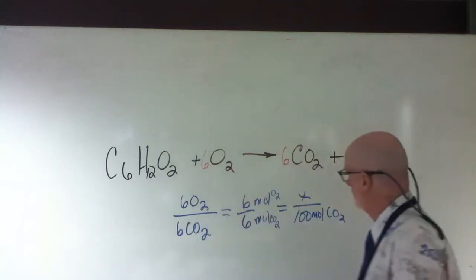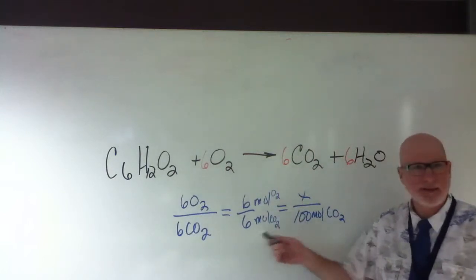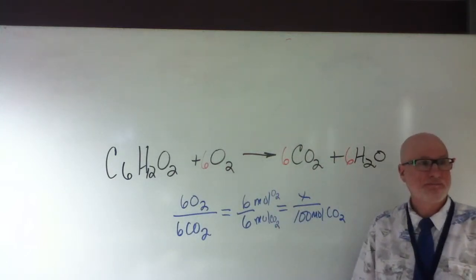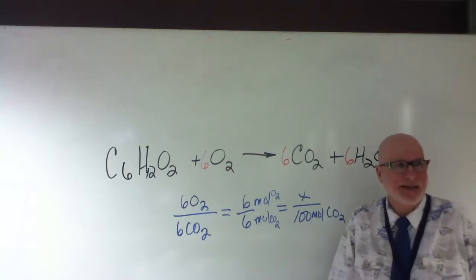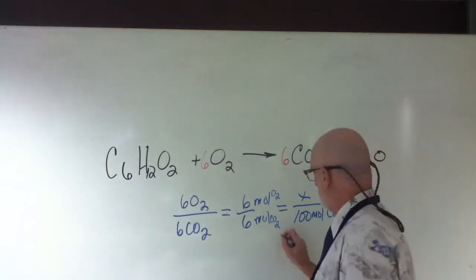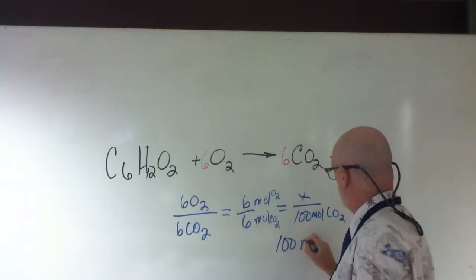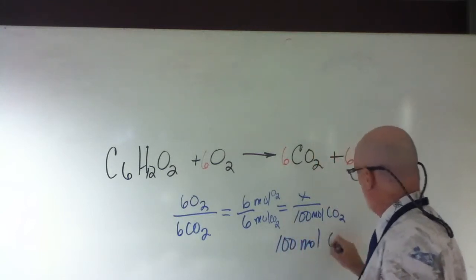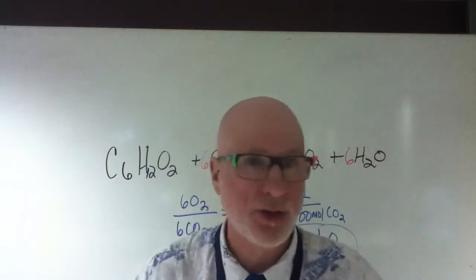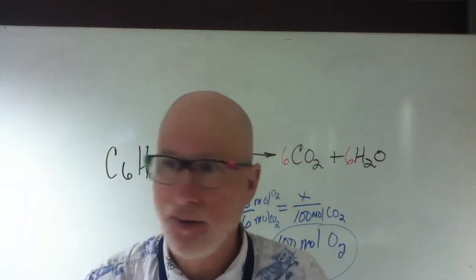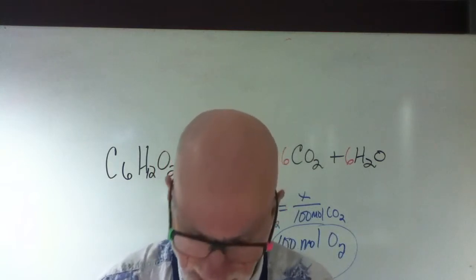What's the answer? What is 6 times 100 divided by 6? 100 moles. Right? You should be able to do that without a calculator. So the answer is 100 moles of oxygen because the mole ratio is one to one, isn't it? Yes or no? Yeah. Pretty straightforward? Yeah.